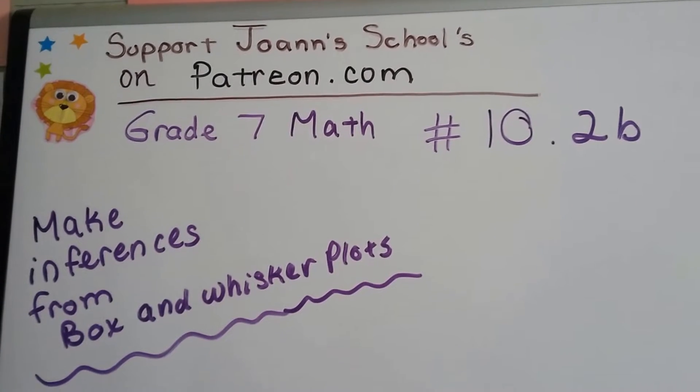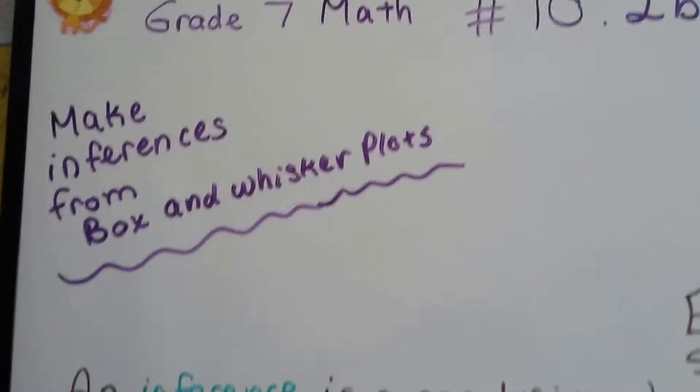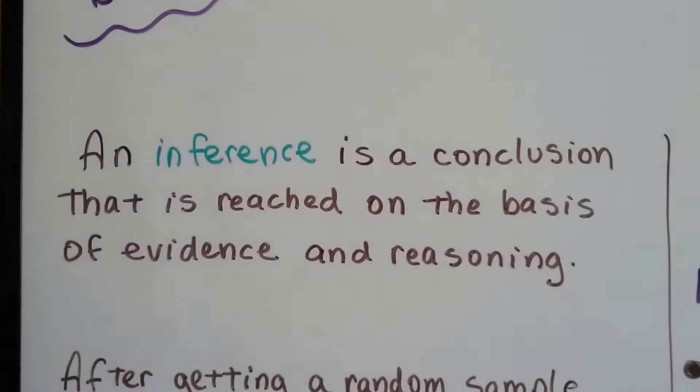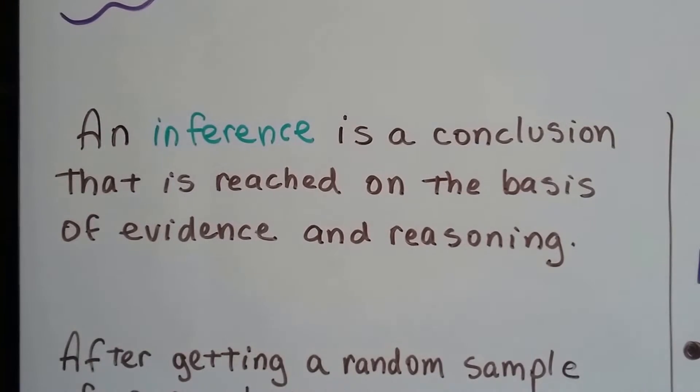Grade 7 math number 10.2b, make inferences from box and whisker plots. An inference is a conclusion that is reached on the basis of evidence and reasoning.